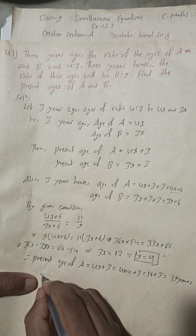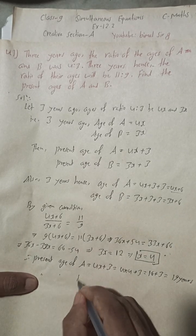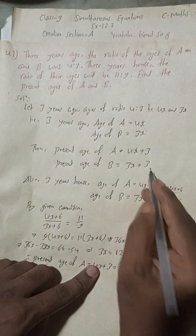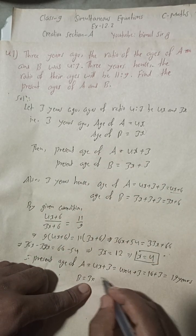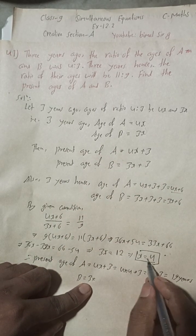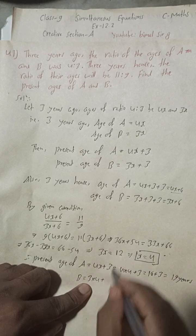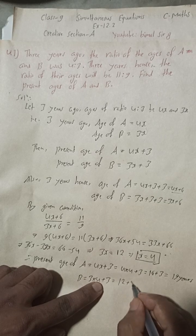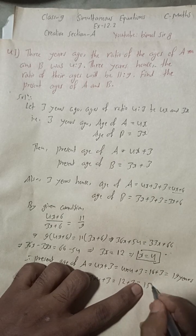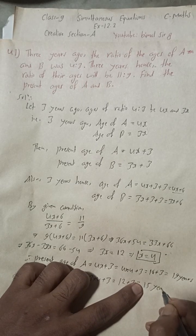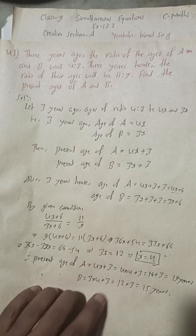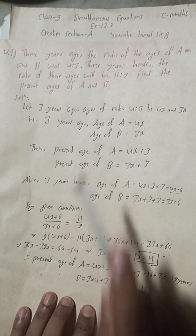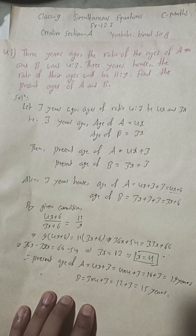And the present age of B is equal to 3X plus 3. Substituting X equals 4: 3 into 4 is 12, plus 3 gives 15 years. So 19 years and 15 years is the required answer of this question.